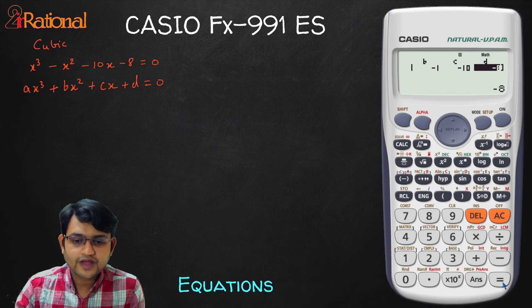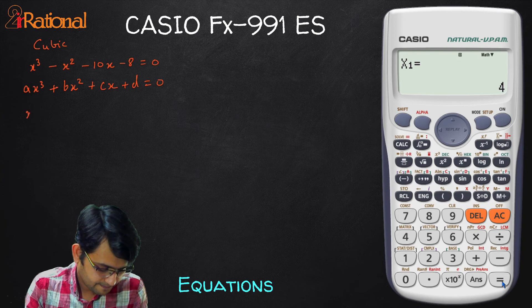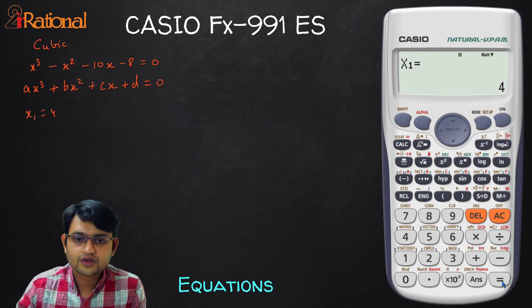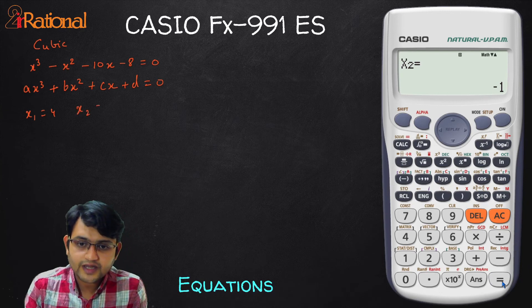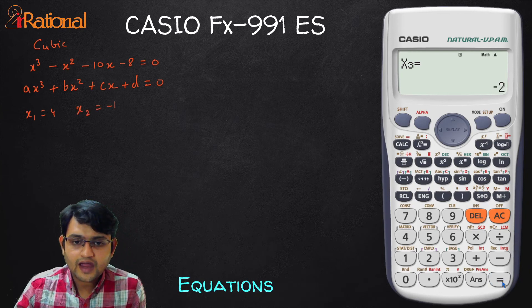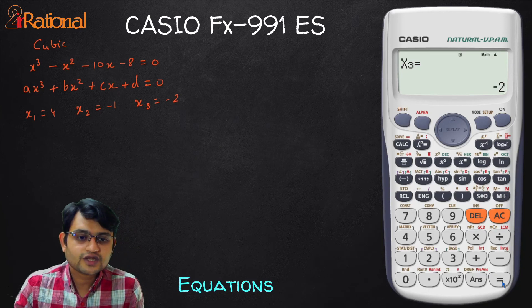After writing all the values if you want to change you can go by arrow and change whichever value you want. I will press equal to and it gives me my X1 4 then equal to that is my X2 that would be minus 1 and my X3 that is minus 2. So these are my 3 roots.